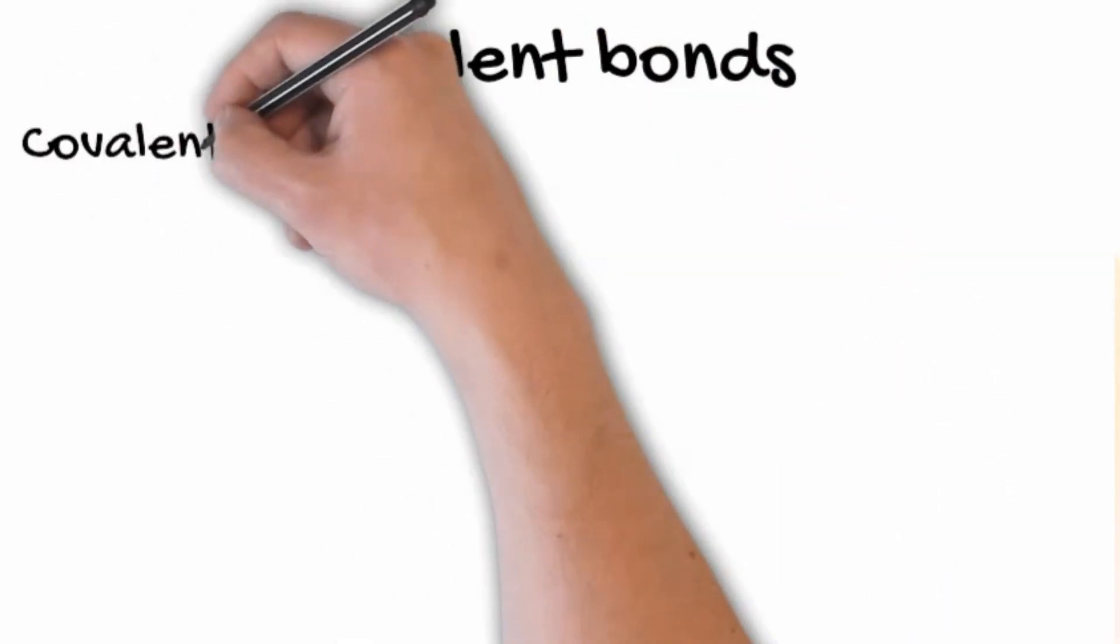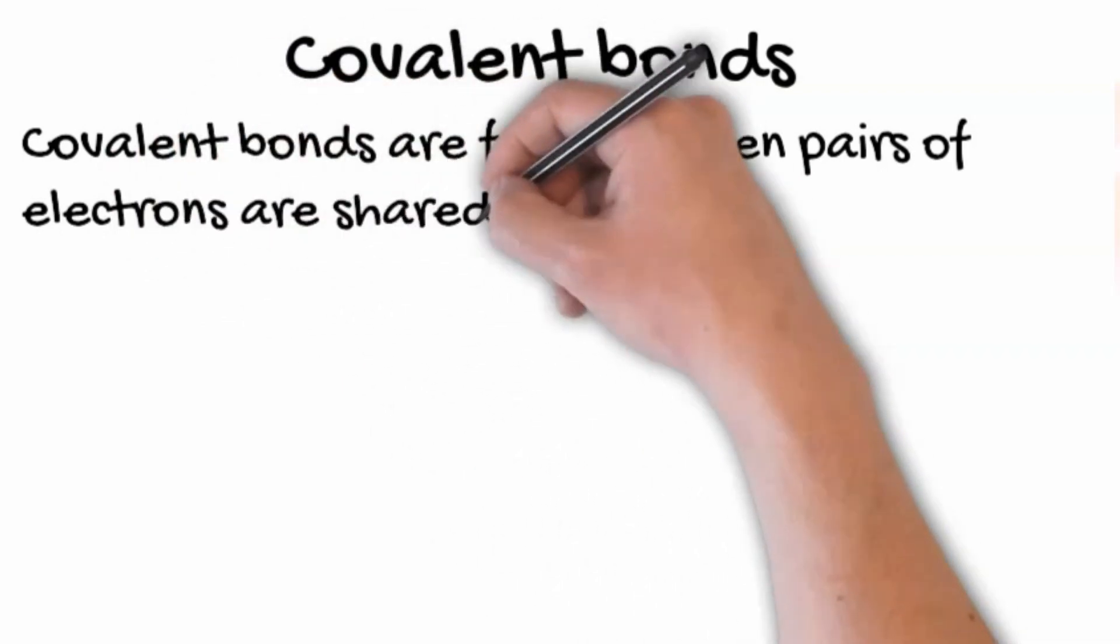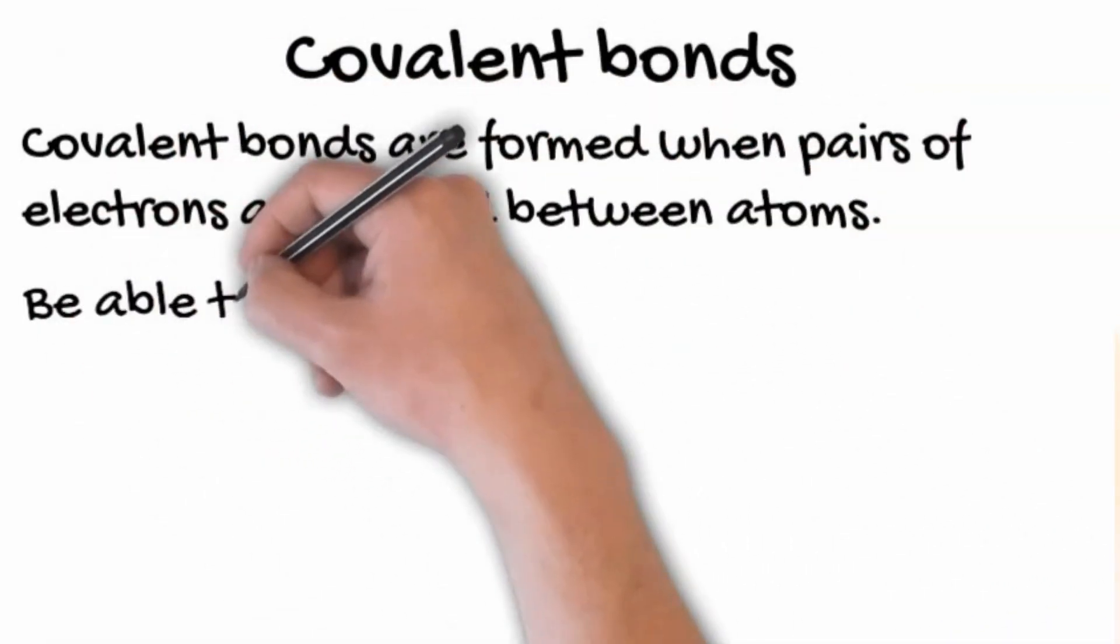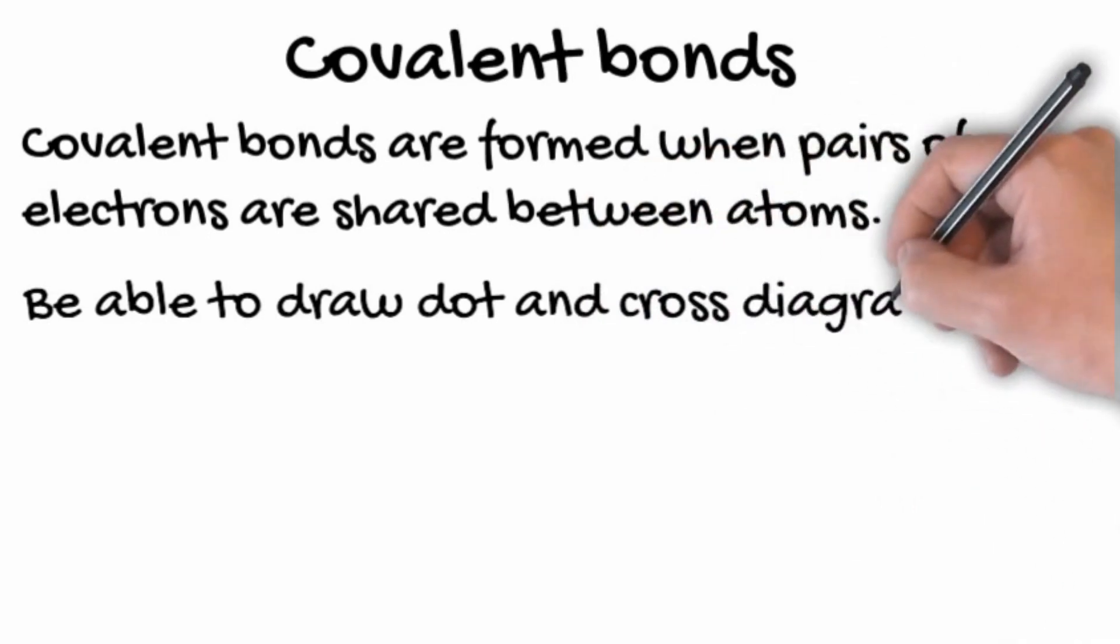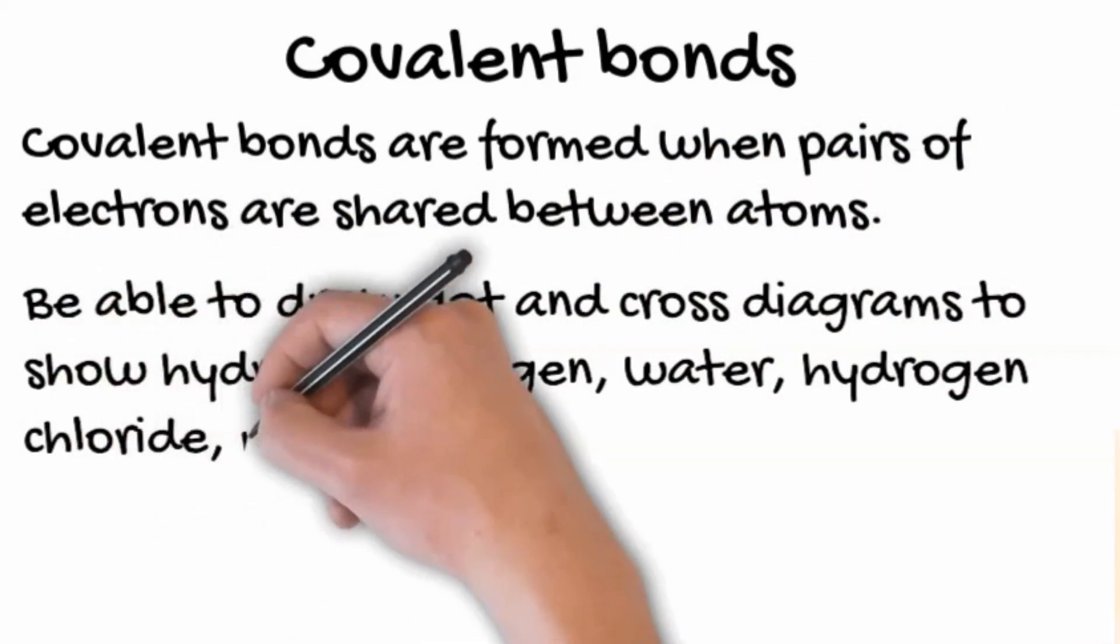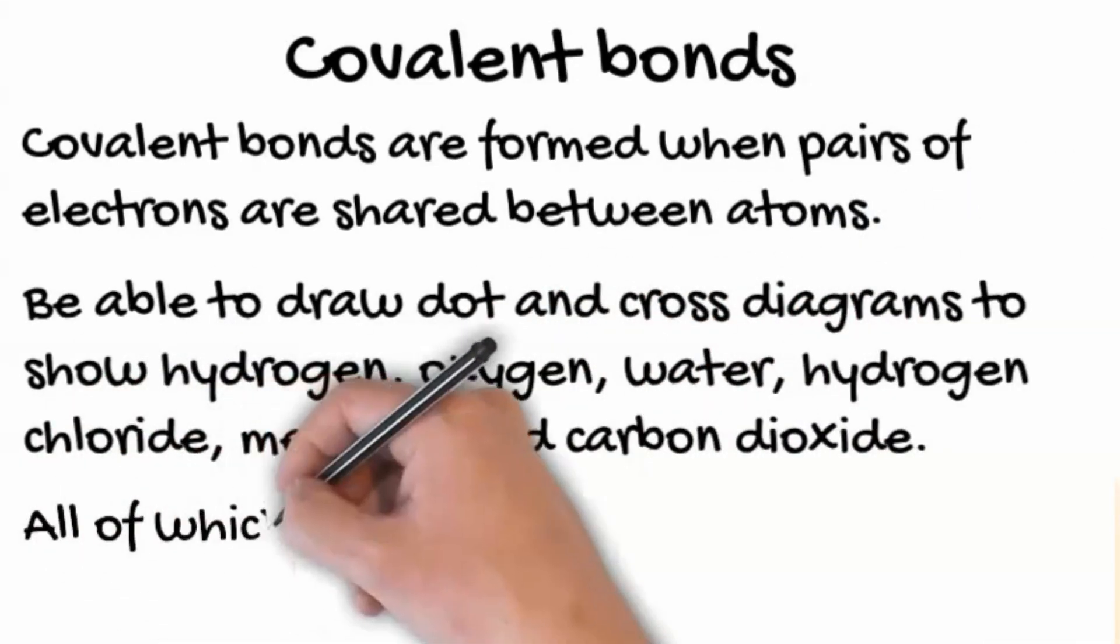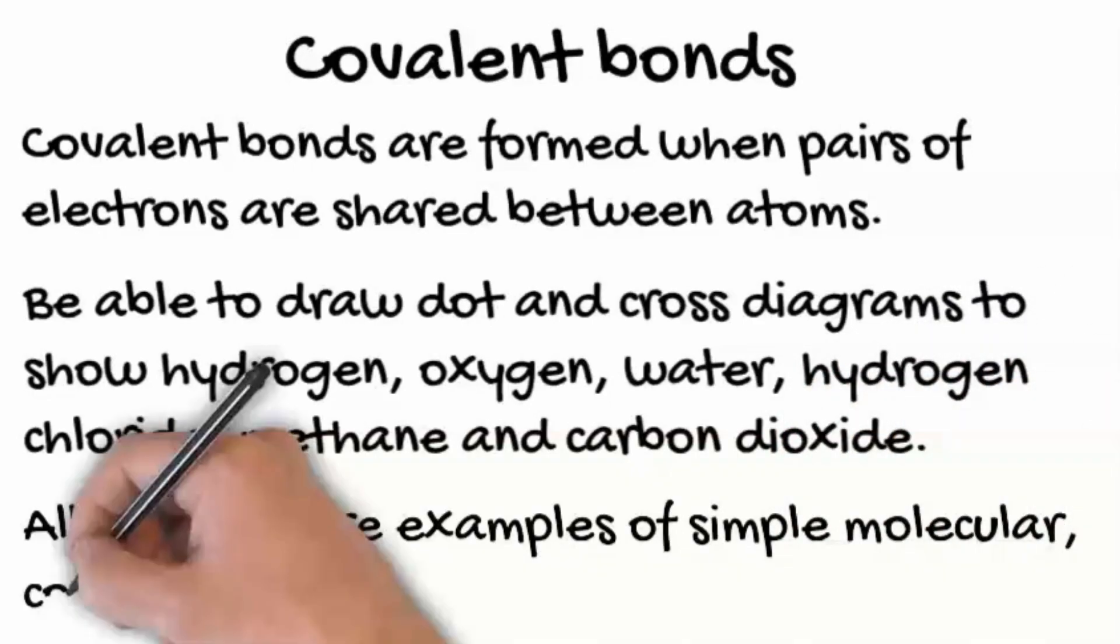Covalent bonds, on the other hand, are formed when pairs of electrons are shared between atoms. You should be able to draw dot and cross diagrams to show hydrogen, oxygen, water, hydrogen chloride, methane, and carbon dioxide, all of which are examples of simple molecular substances.